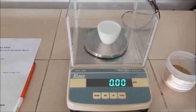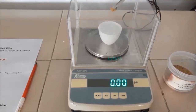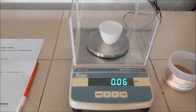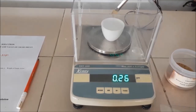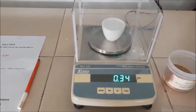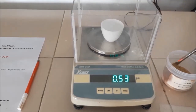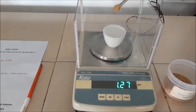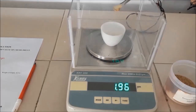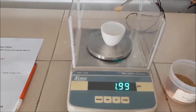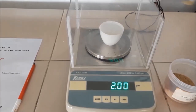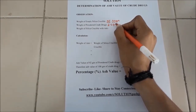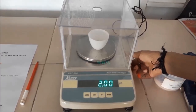Tare the weight of the silica crucible to get zero. Now accurately weigh about 2 grams of the powdered air-dried crude drug of which we have to determine the ash value. You can also weigh between 2 to 4 grams or any other specified amount for a particular drug.